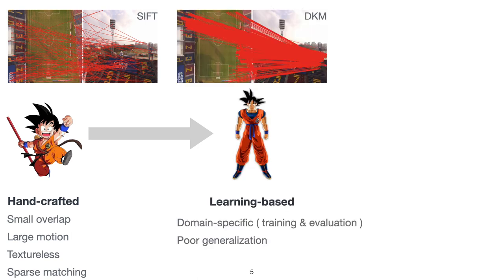Learning-based methods leverage priors learned from data to achieve much higher accuracy. However, due to the lack of large-scale and diverse labeled data, current approaches typically train and evaluate models separately for indoor and outdoor scenes. Such domain-specific protocol limits generalization and makes the model perform poorly on zero-shot data, and also makes trained models impractical for applications with unknown scene types.